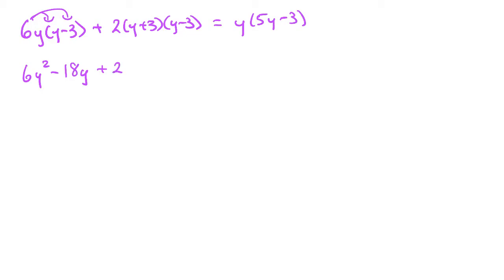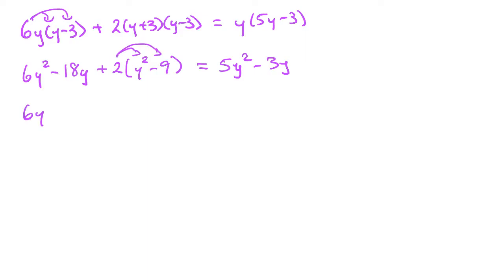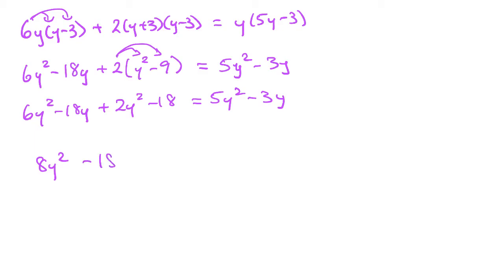Plus 2 times y squared minus 9, which gives 2y squared minus 18. On the right-hand side, distributing y gives 5y squared minus 3y. So the full expanded equation is 6y squared minus 18y plus 2y squared minus 18 equals 5y squared minus 3y. Combining y squared terms on the left: 6y squared plus 2y squared gives 8y squared, minus 18y, minus 18, equals 5y squared minus 3y.